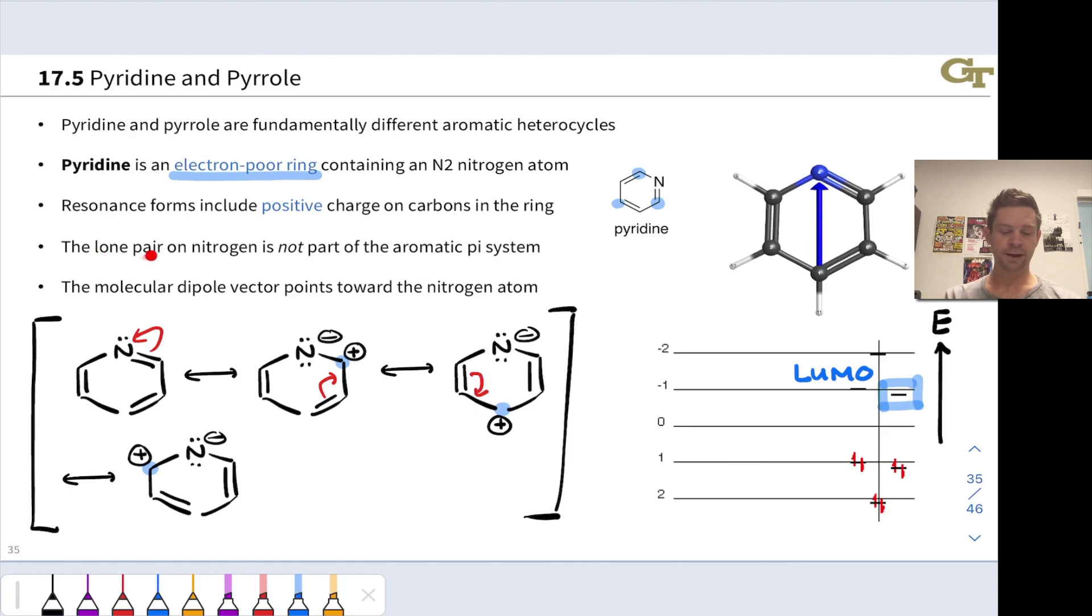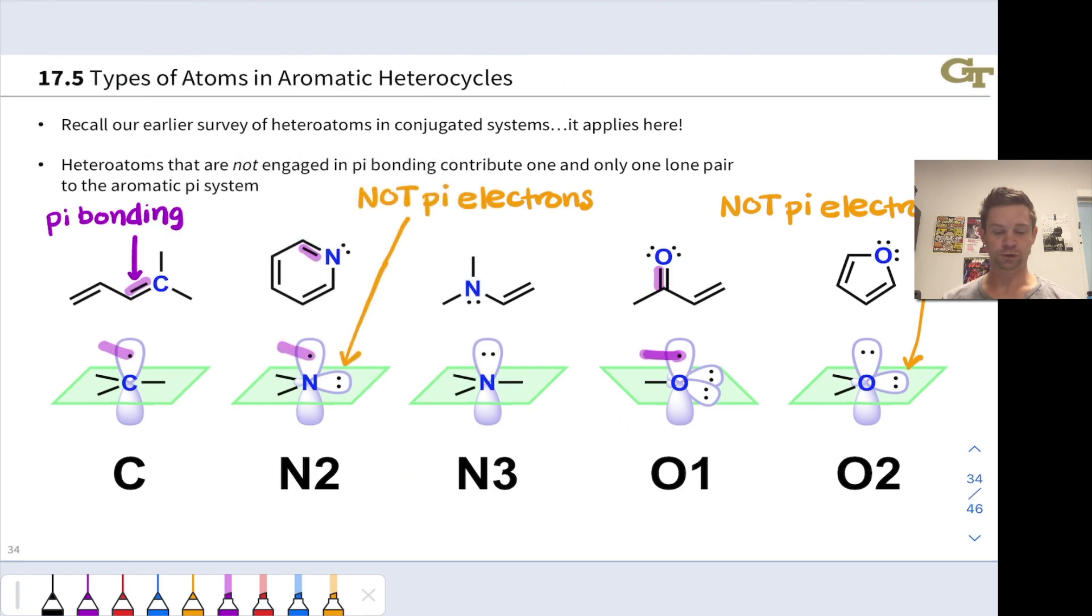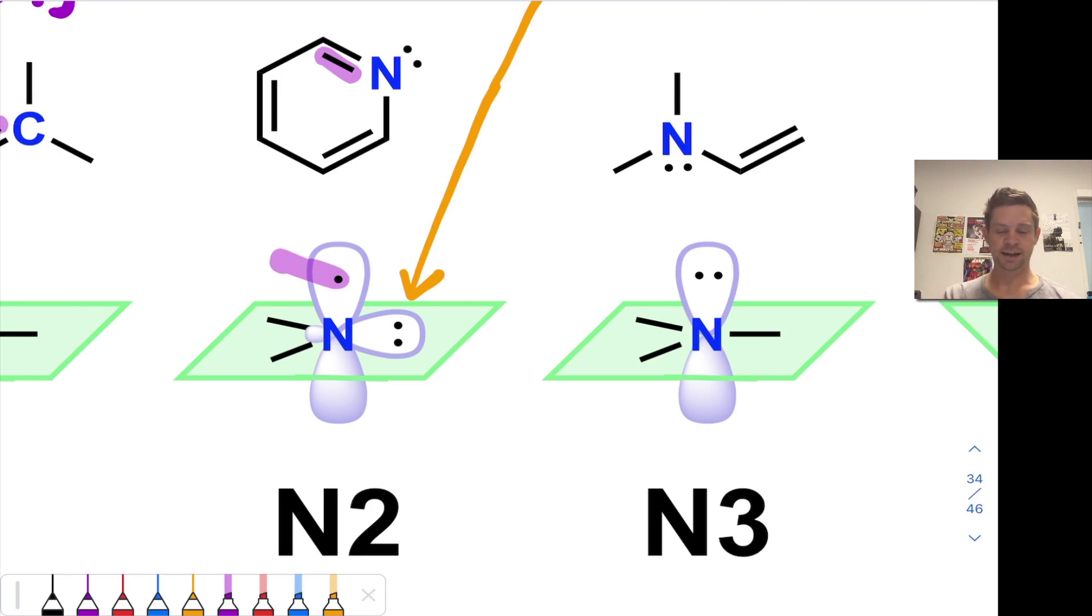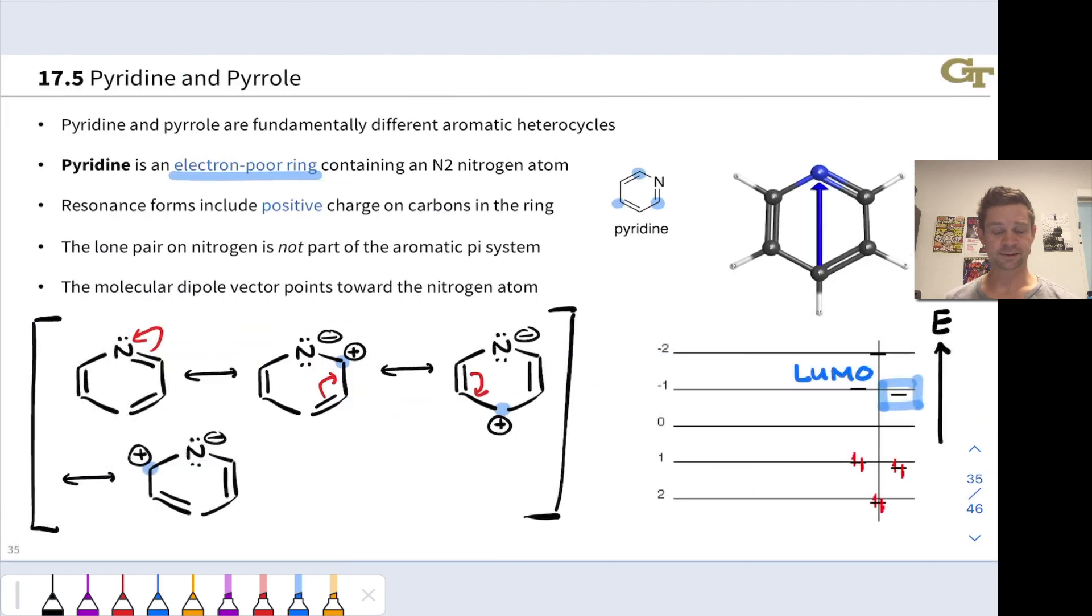Notice also that the lone pair on nitrogen and pyridine is not part of the pi-system. This is an N2 nitrogen, and if we return to our picture of the N2 nitrogen, in fact, here it is in pyridine, this lone pair is not part of the pi-system. So it's free to act as a base, and pyridine is a pretty decent base. We'll see it act as a base in reactions later down the line in organic chemistry, too.